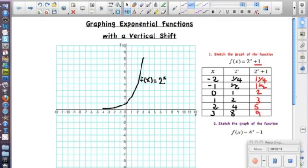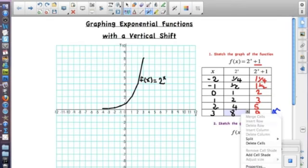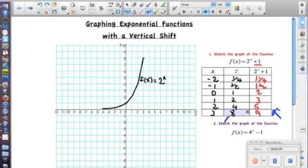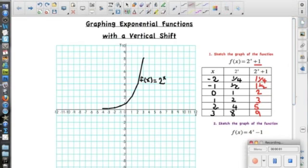So you may notice that all of the values in this column, the column that we just did, is 1 more than each of the values in this column. Because all we really did was add 1 to that 2 to the x equation. It's now, instead of just 2 to the x, it's now 2 to the x plus 1. So these values on the right are just 1 more than the values on the left. Okay, great. So now that we have all of our x values and all of our new f of x values, we can start to plot the points on our graph.